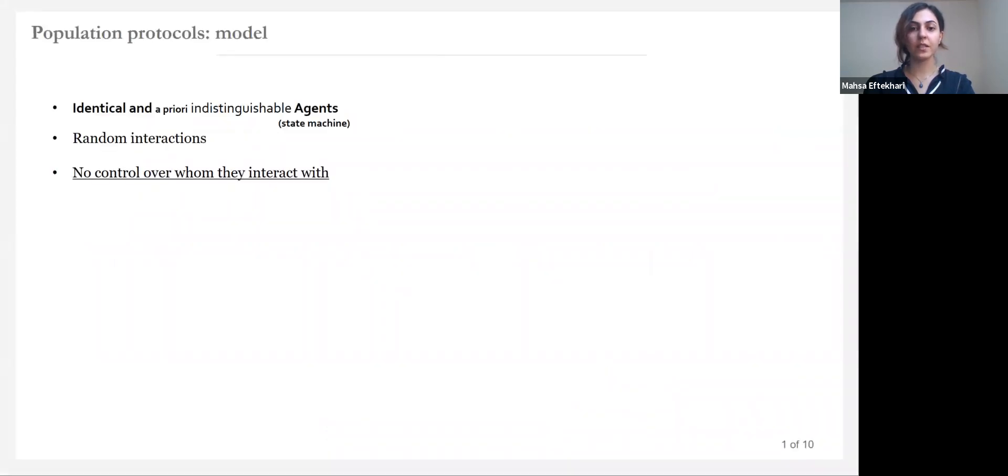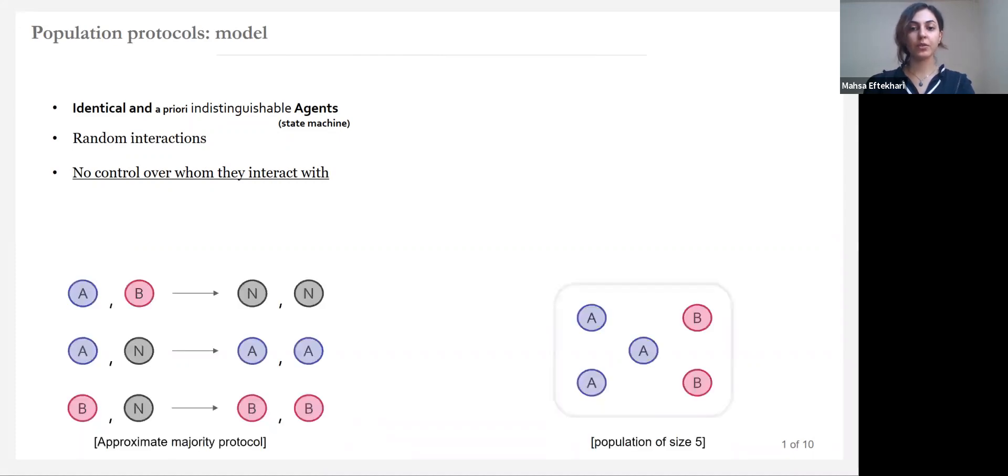Population protocols are asynchronous complete networks of computational entities called agents that have no control over whom they interact with. Here is an example of a protocol with three transitions. A protocol consists of a pair of states as input and as output that specifies how the agents should update their states.